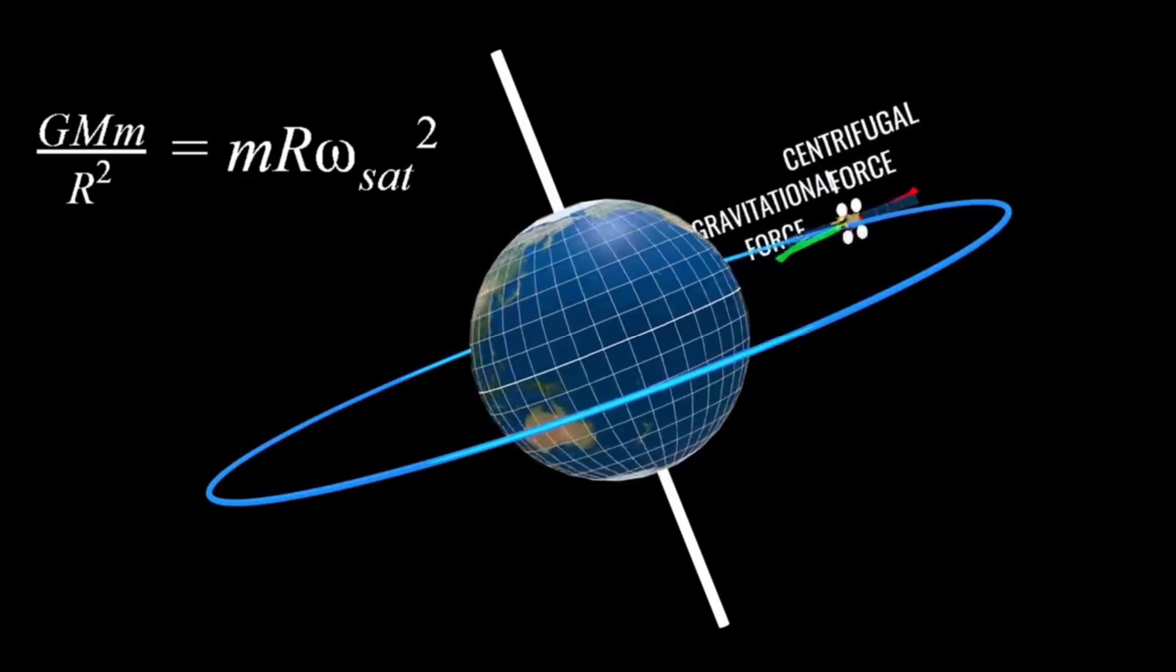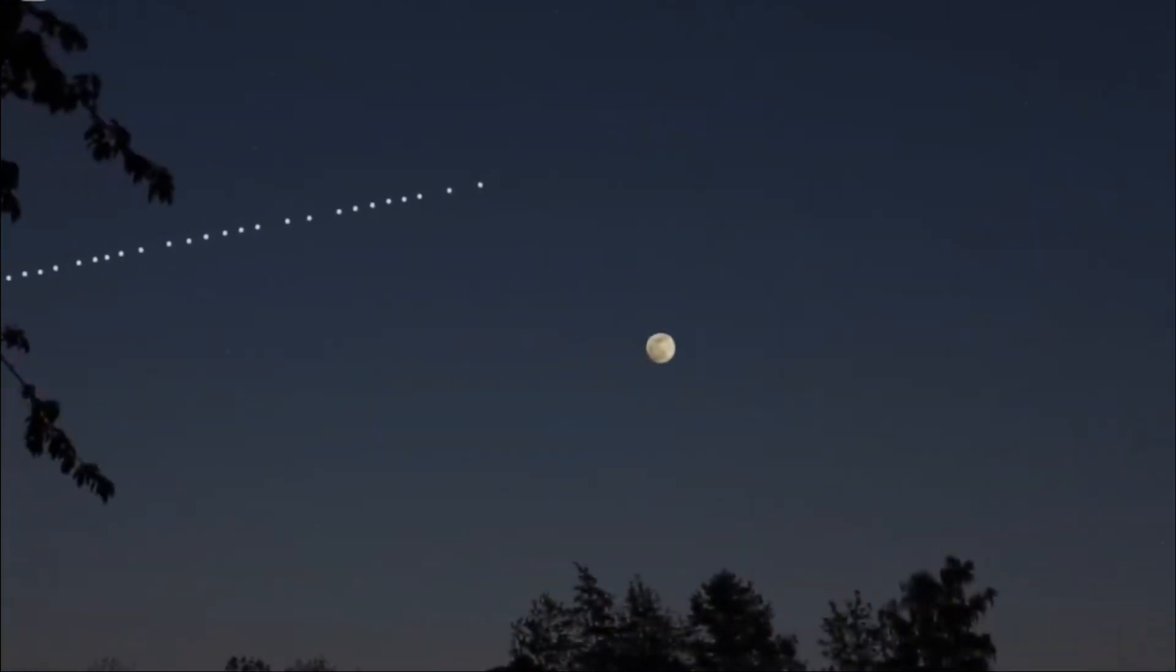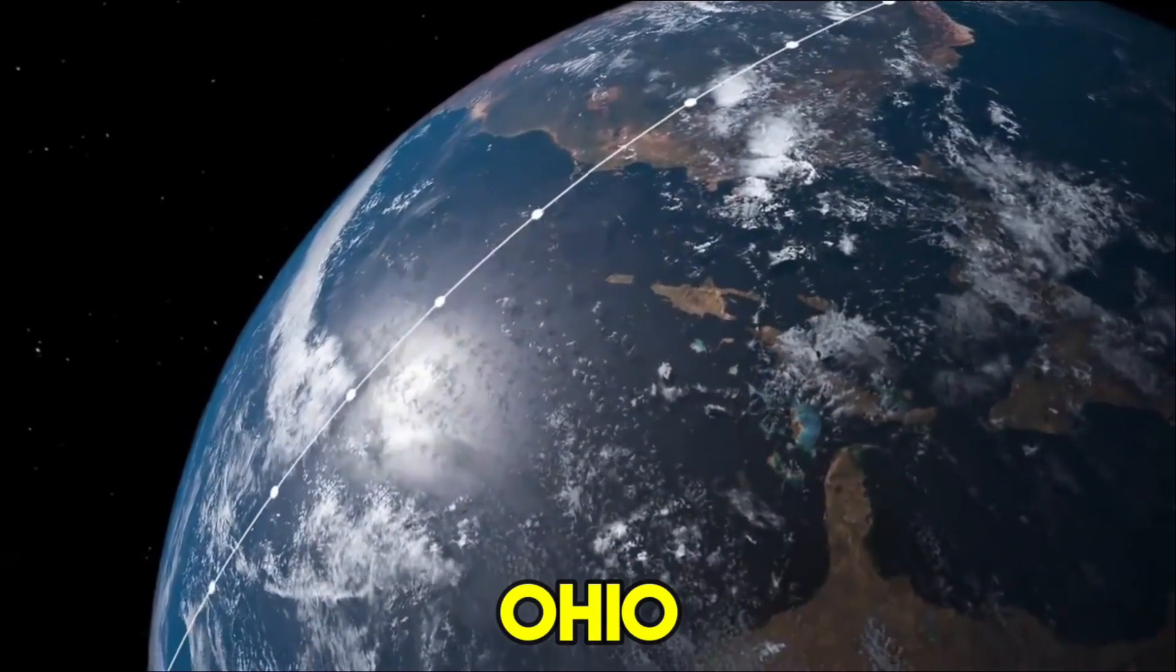Unwittingly, other members of the public have also dubbed these internet beaming satellites as UFOs, especially after sighting them in the night sky across several states, including Utah, Michigan, Illinois, Connecticut, Ohio, and Wisconsin.